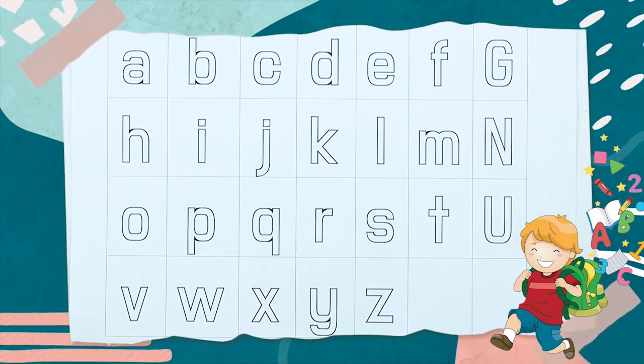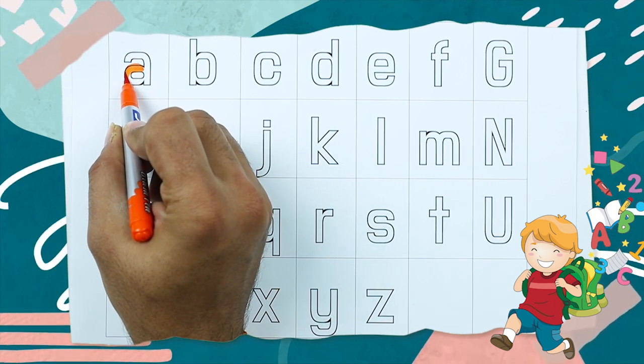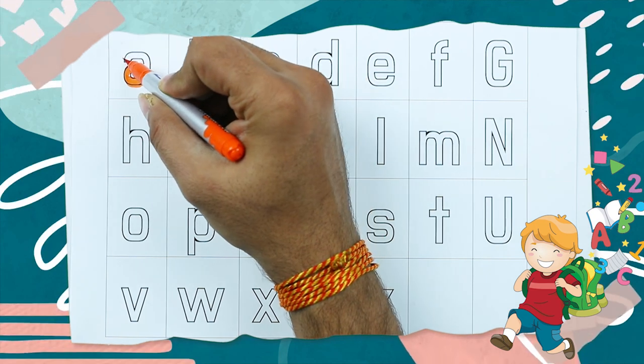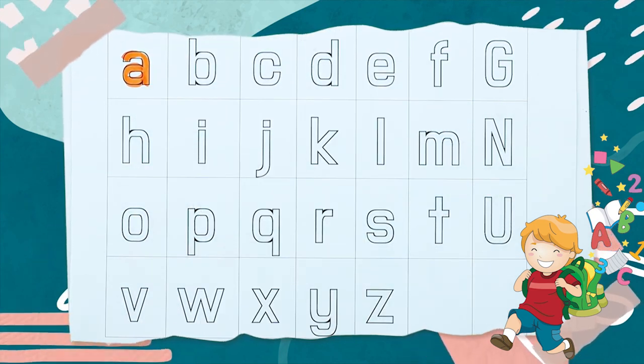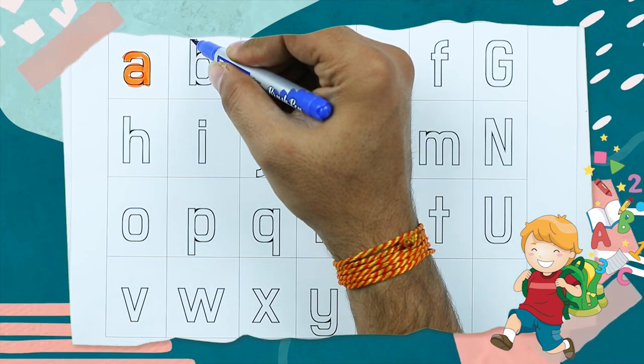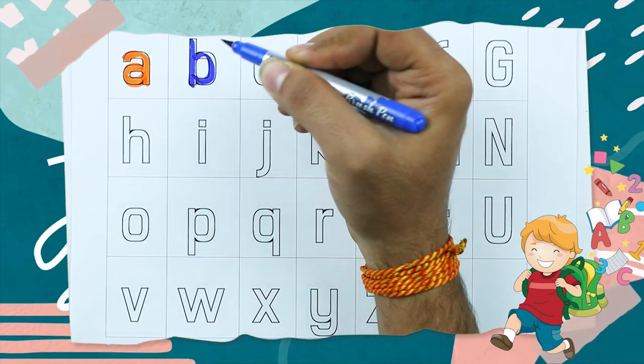Let's start. Make small A. A for apple, it's A. B, B for ball, small b.